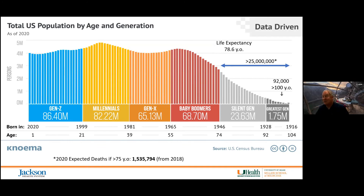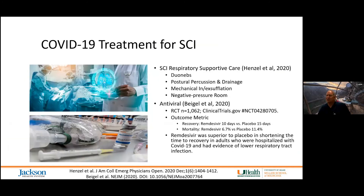Currently there are more than 95,000 individuals in the United States over the age of 100. Yes, they are at higher risk. We've really never seen testing at the level we're seeing now, and that's important context for interpreting the numbers.